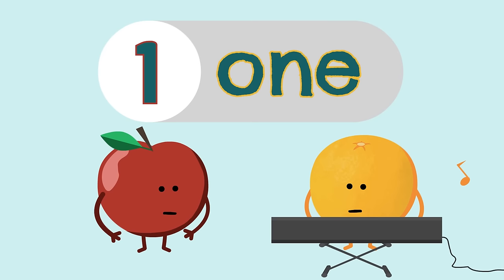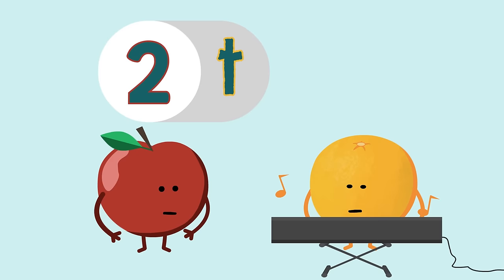How do you spell one? O-N-E. How do you spell two? T-W-O.